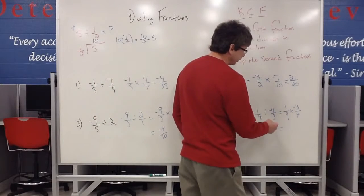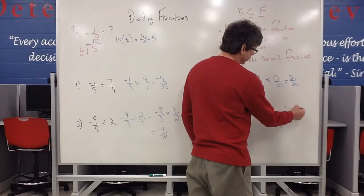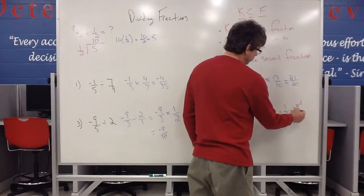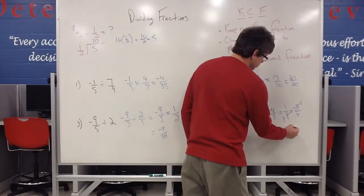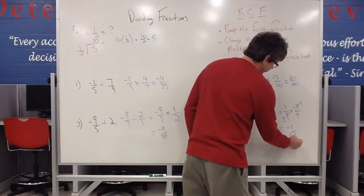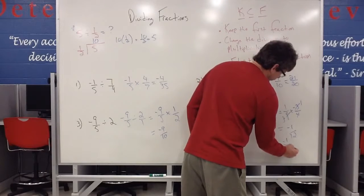So on this one, I did see something going on here. That nine and three have some common factors, so I can divide a three out. That changes to a one, that changes to a three, and then I have a negative one. I have one times negative one, which is negative one, over twelve. So I end up with negative one-twelfth. That's my answer.